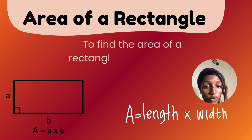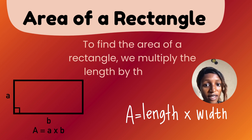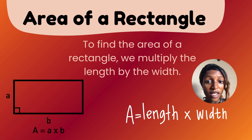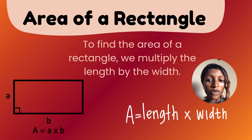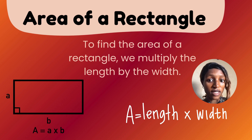Area of a rectangle — to find the area of a rectangle, we multiply the length by the width. Unlike a square where all sides are the same size, in a rectangle you can see the length is different from the width. To find the area of a rectangle: length times width, or A times B — that's how to find the area of a rectangle.